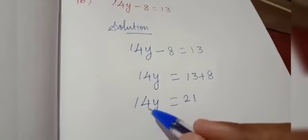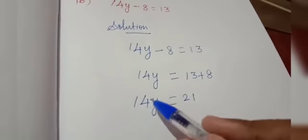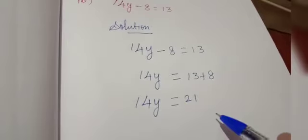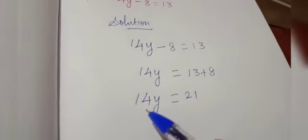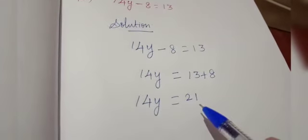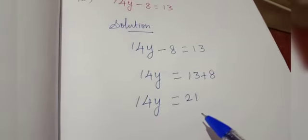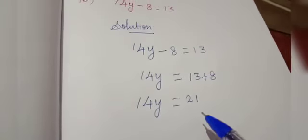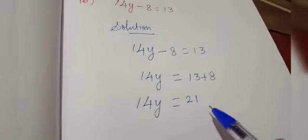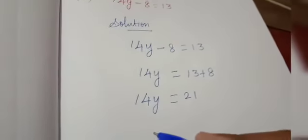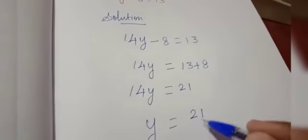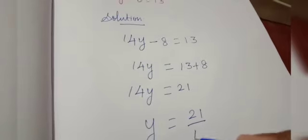So 14y is equal to 13 plus 8, which is 21. Now, to find the y value, we have to bring the product 14 to the right side. We are bringing product 14 to the right side; we should write it in the denominator of the right side. Product means divide, divide means product.